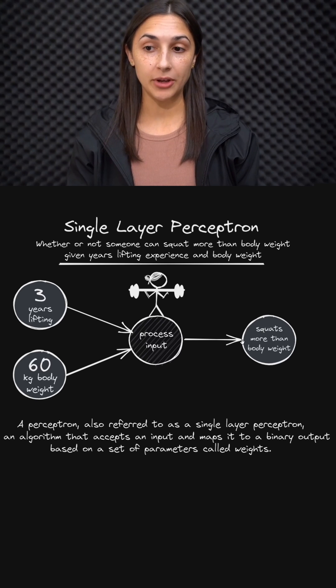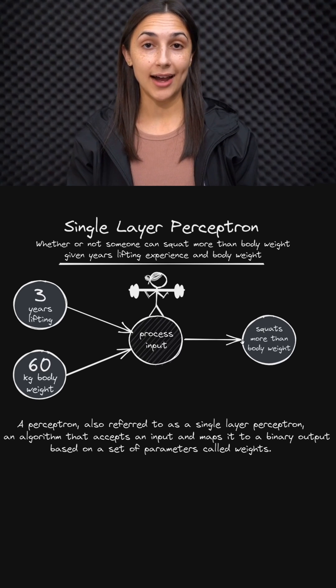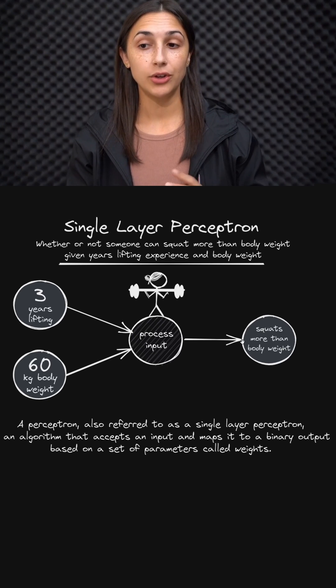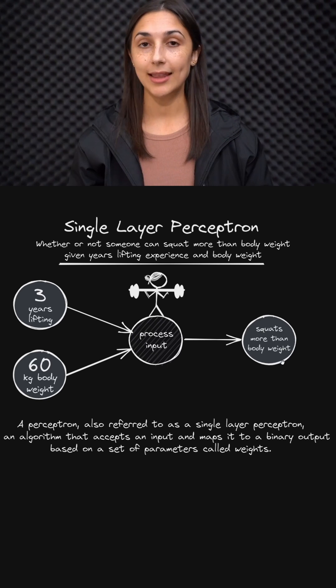The binary comes from the fact that the output is binary, so the person can either squat more or less than their body weight. So we have two different possibilities here, and these binary outputs from the perceptron must be what's called linearly separable.